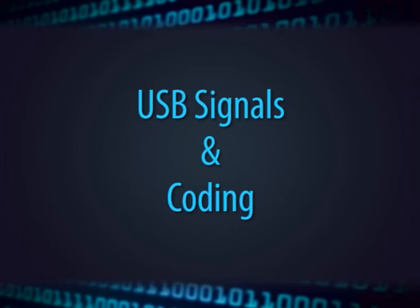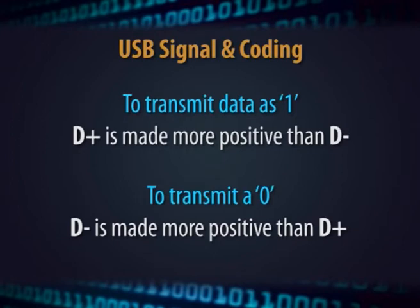USB signals and coding: USB signals are transmitted using differential signaling on a twisted pair data cable. Differential signaling means that to transmit data as 1, D-plus is made more positive than D-minus. To transmit as 0, D-minus is made more positive than D-plus. This cancels out common noise on both wires and gives higher reliability than serial interface.